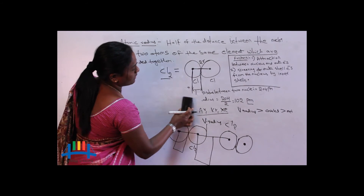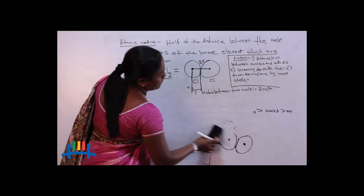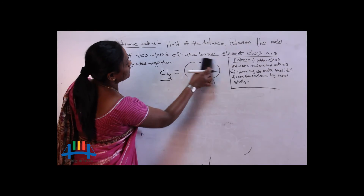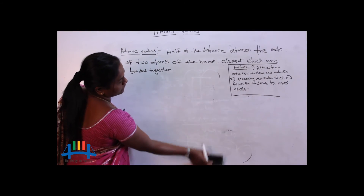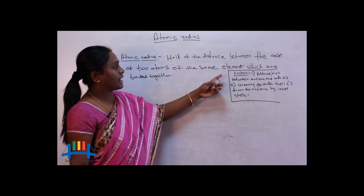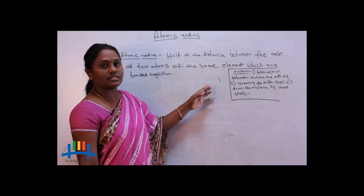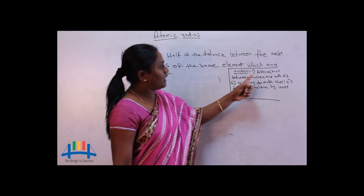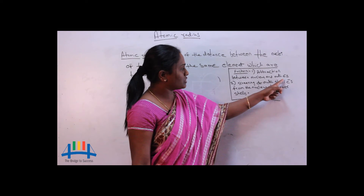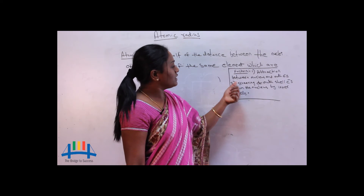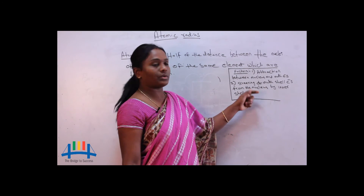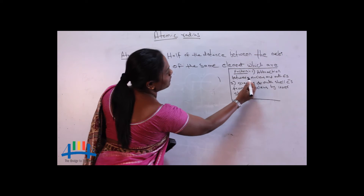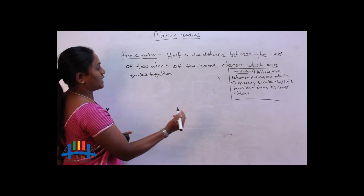Now, what are the factors that affect atomic radius values? There are two factors which affect the values of atomic radius. They are: first, the attraction between the nucleus and the outermost electron; and second, the screening of outer shell electrons from the nucleus by inner shells. We will first learn about the attraction between the nucleus and the outermost electron.